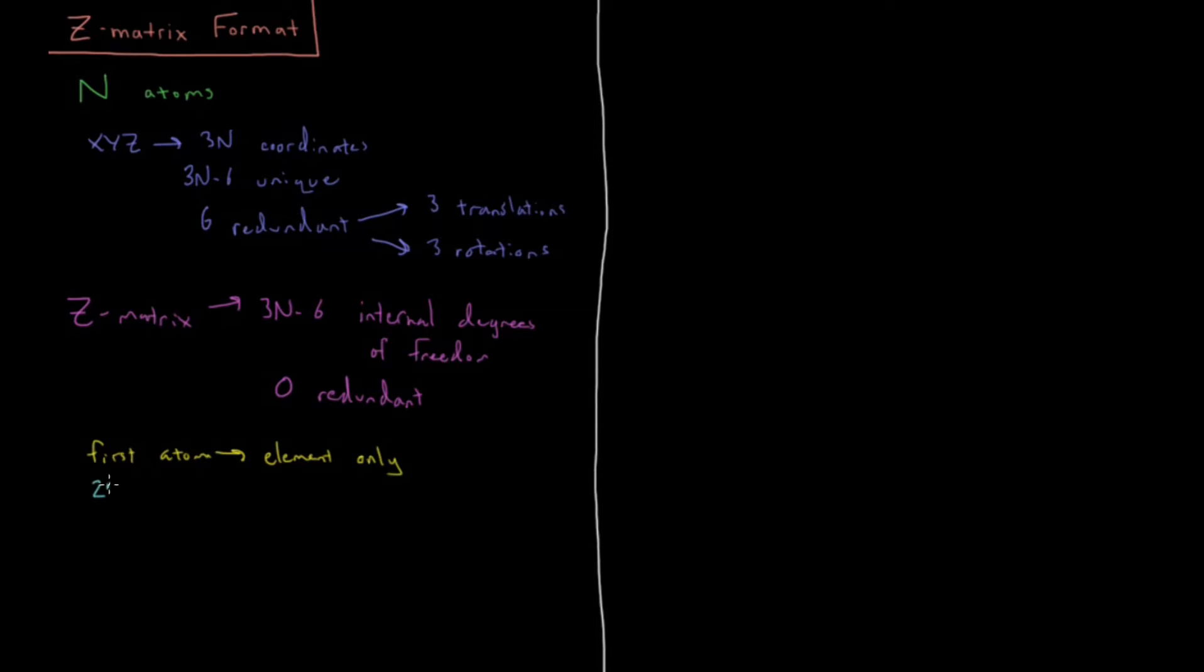For our second atom we have the element and a bond length. Now this removes two of those redundant rotations because the only thing that matters is how far away this atom is relative to atom 1. We could constrain this to be at the origin, and we could constrain the second atom to be on the Z axis, making our coordinates unique thus far.